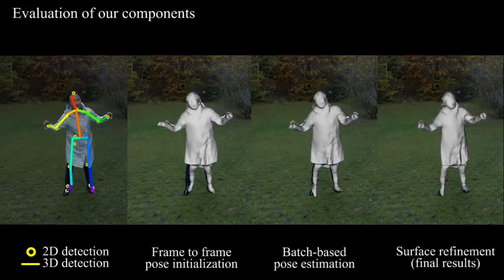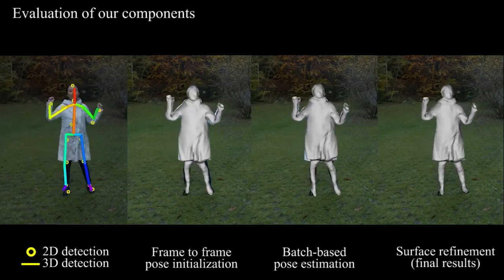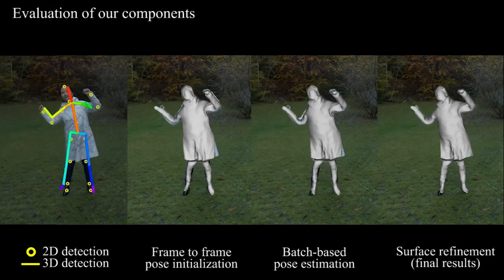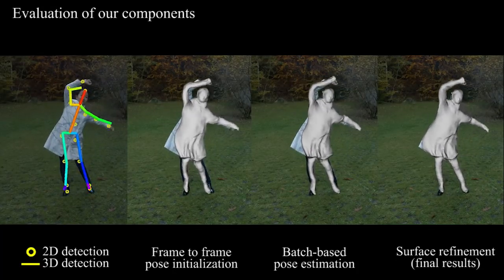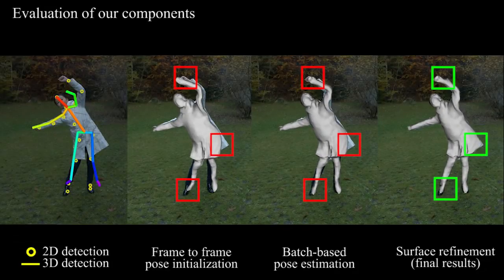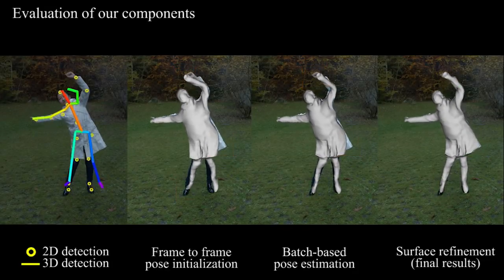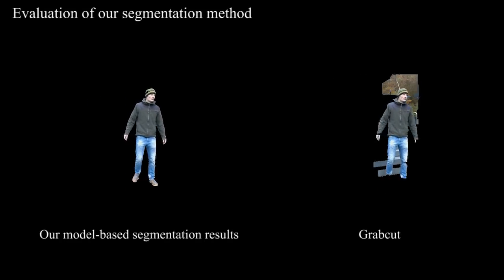We evaluate the components of our approach. Even though the 3D predictions are often incorrect, our batch-based optimization leads to correct results. In addition, silhouette-based surface refinement significantly improves the overlay. Our model-based segmentation approach yields consistently higher accuracy than naive GrabCut.